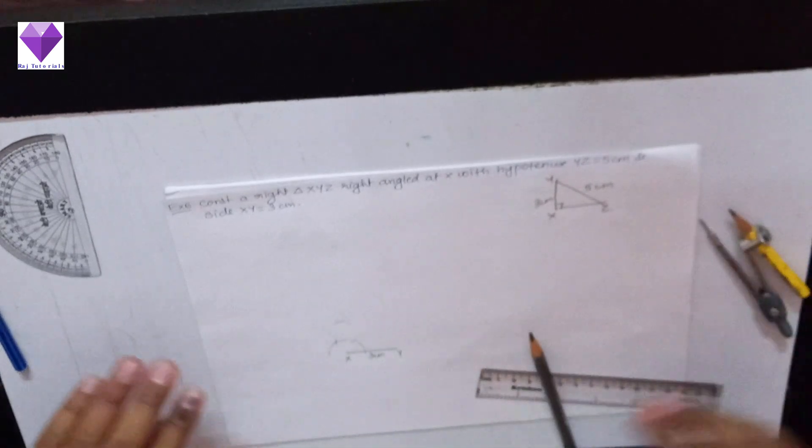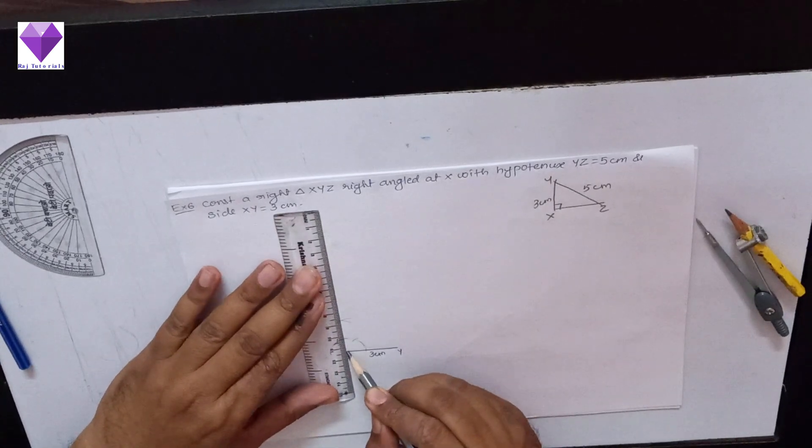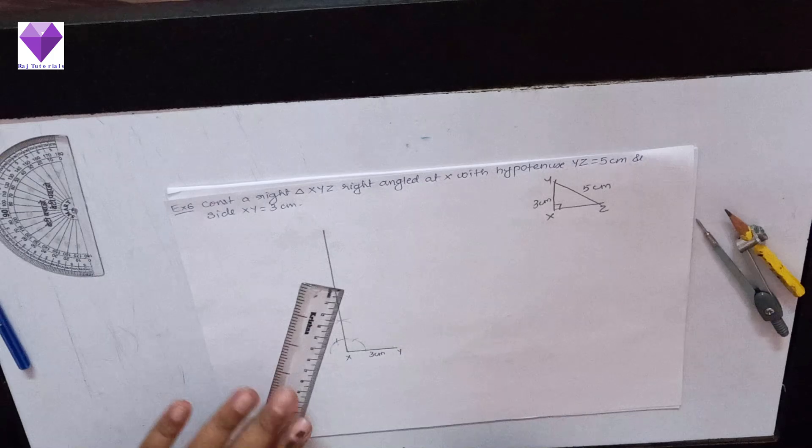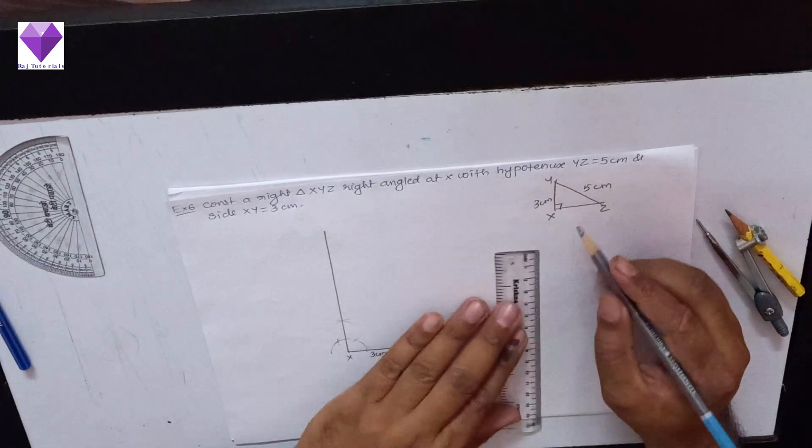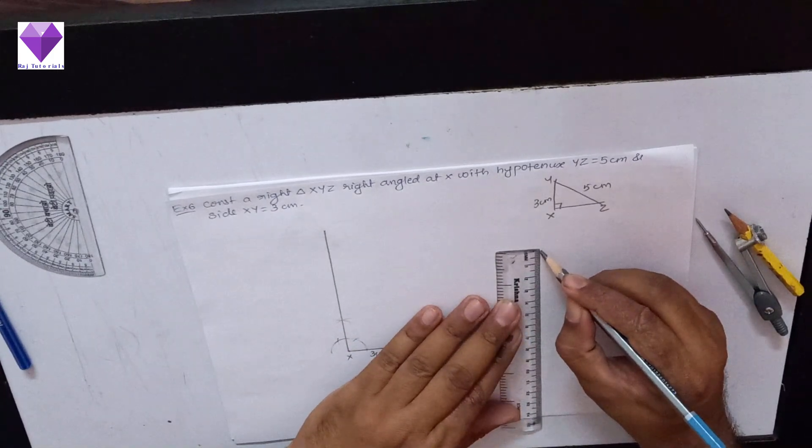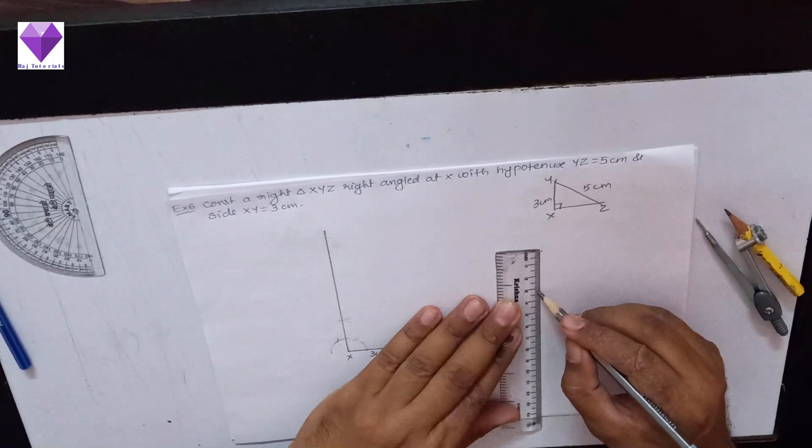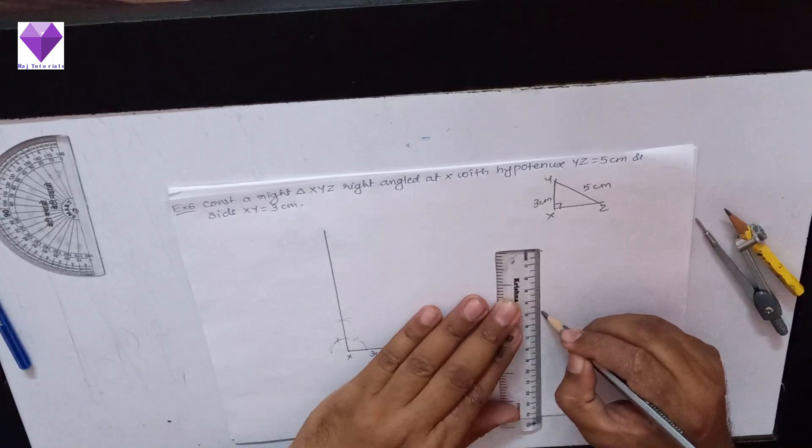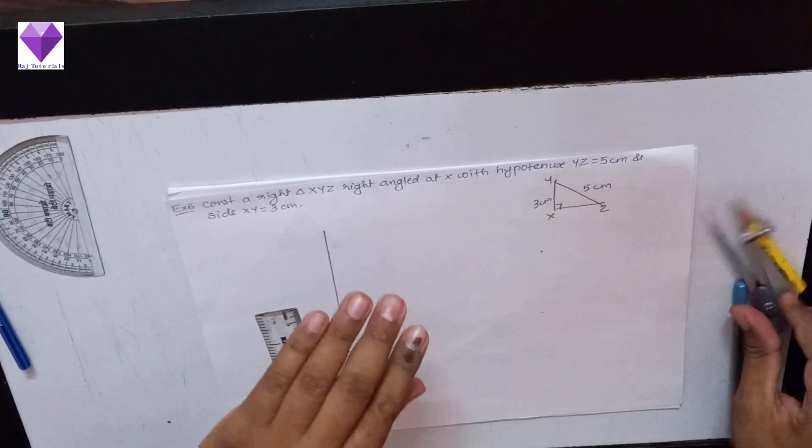Now I will join this bisected angle arc and now I have to cut 5 cm on that. So I will measure 5 cm in the rounder and I will give a cut on that.